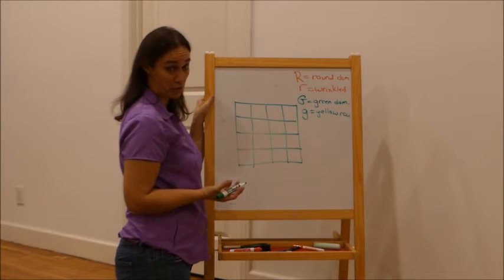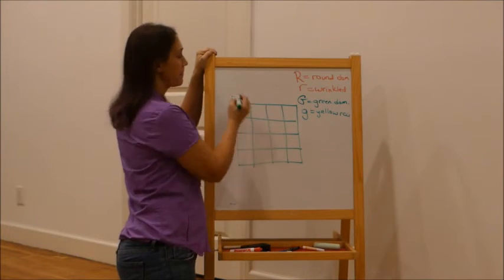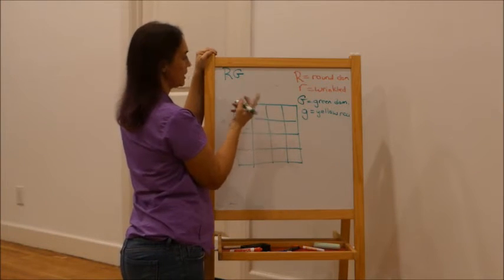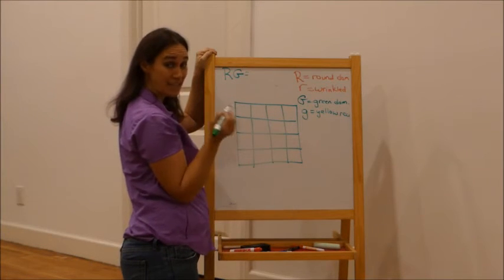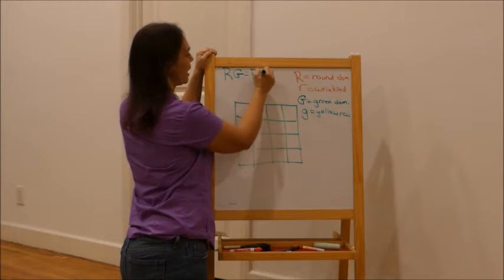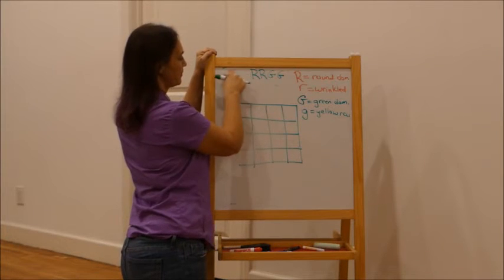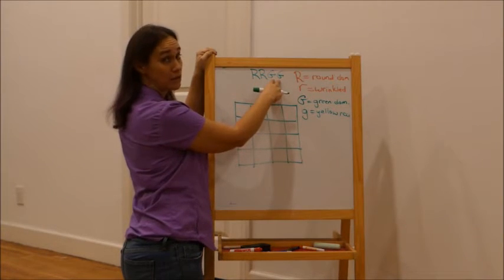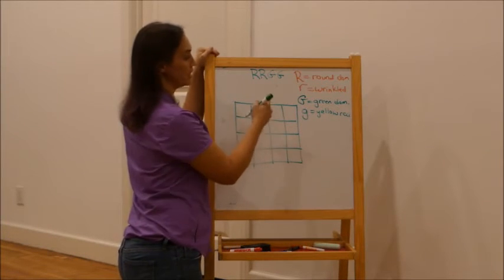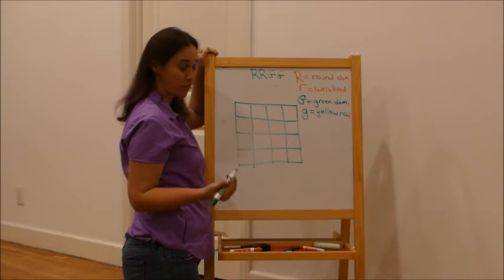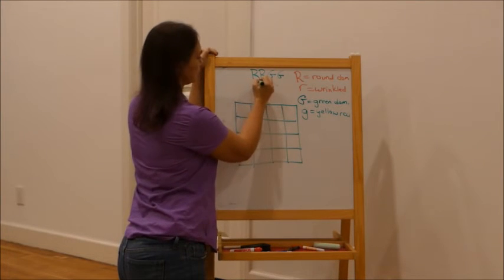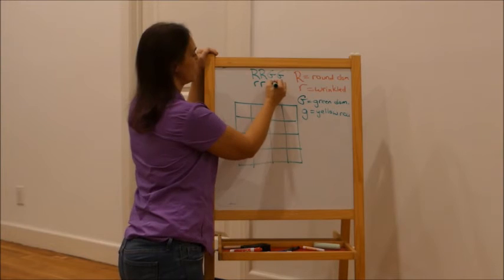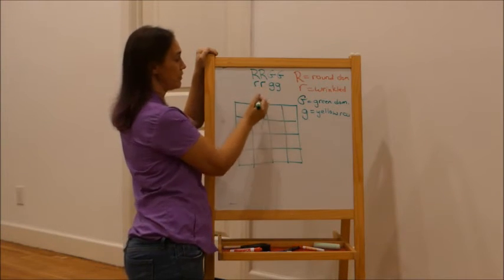Here's our Punnett square. We're going to say that one parent is round and green and is homozygous dominant for both traits, so its genotype is capital R capital R, capital G capital G — round dominant homozygous and green dominant homozygous. The other parent is homozygous recessive for both traits: lowercase r lowercase r, lowercase g lowercase g — wrinkled and yellow. Those are our two parents.